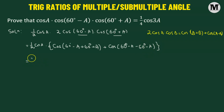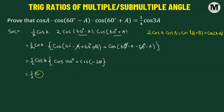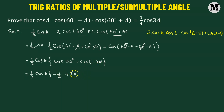Further simplification gives us half times cosine of angle A multiplied by: here we have negative A and positive A cancelling out, leaving cosine of 120° plus cosine of angle — and here we have 60 and negative 60 cancelling out, leaving us with negative 2A. Further simplification gives us half cosine of angle A multiplied by: cosine of 120° has a standard value of negative one half, and cosine is an even function, so cosine of negative 2A is positive cosine of 2A.